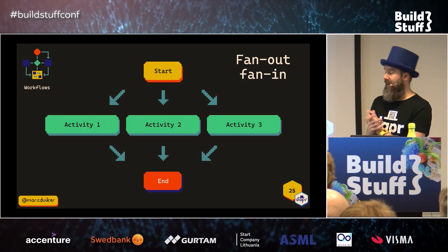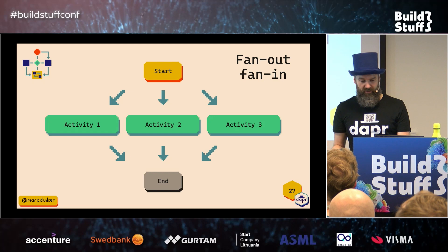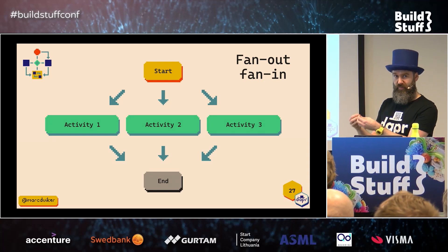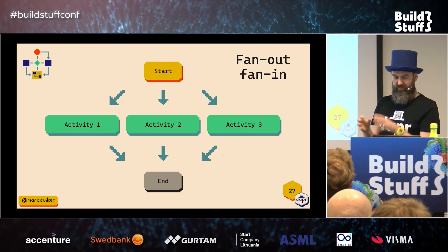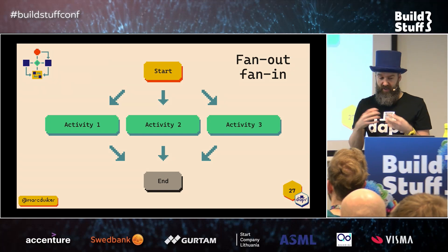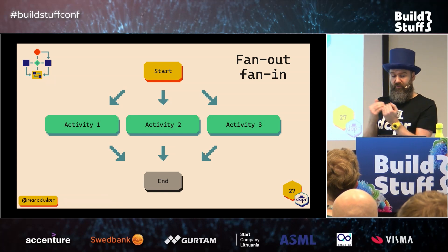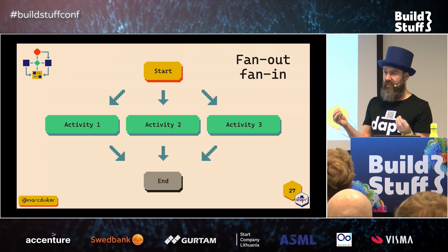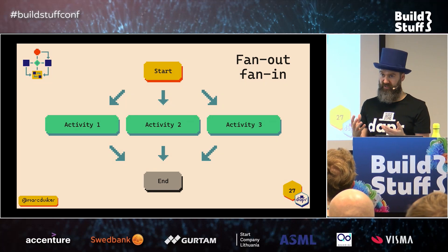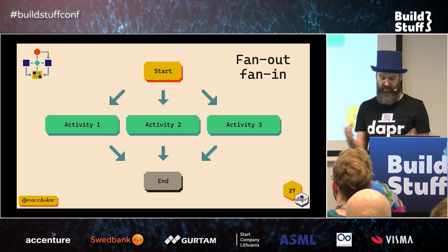Another method is fan out, fan in. Here the order is not important — the orchestration will start and schedule as many tasks in parallel as possible. All these activities have no relationship with each other, so they can be executed in batches. The workflow will wait until all activities have been completed, and then you can do some aggregation over the results. This is very useful for batch processing where you want to make some sum at the end.